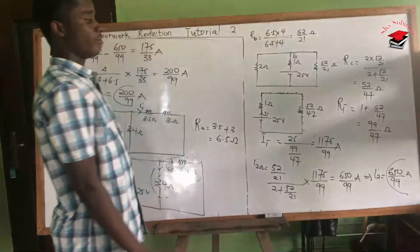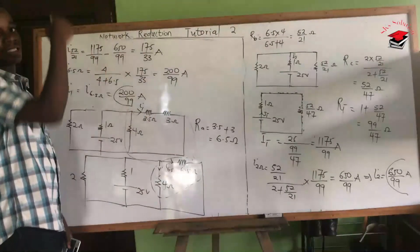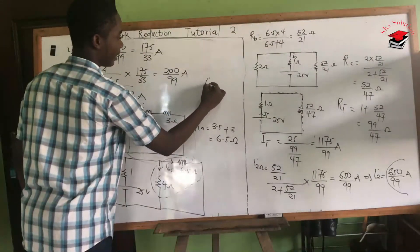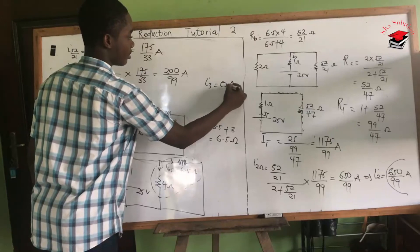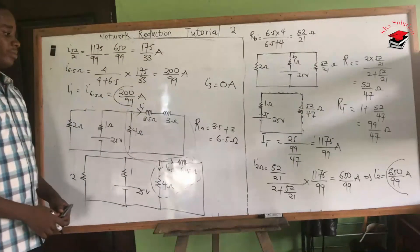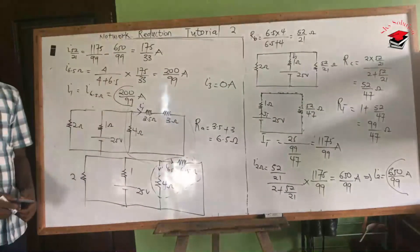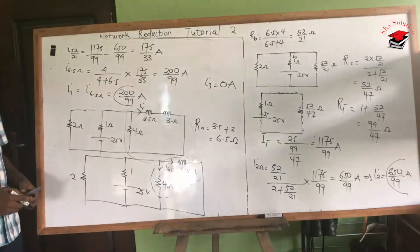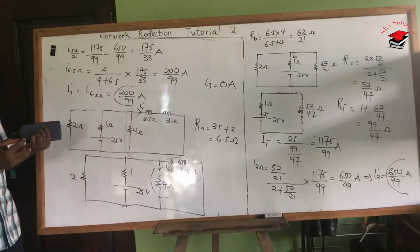In summary: I1 = 200/99 amperes (approximately 2.02 A), I2 = 650/99 amperes (approximately 6.56 A), and I3 = 0 amperes. That is the complete solution to this network reduction problem. Thank you very much for watching this tutorial.